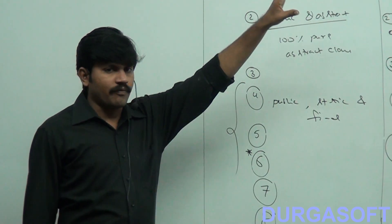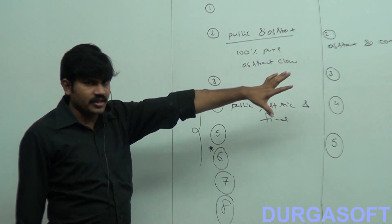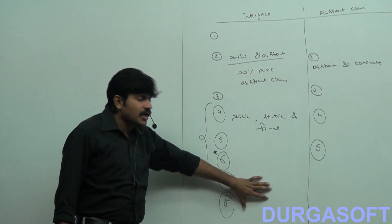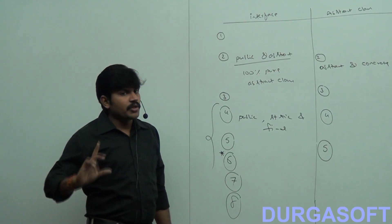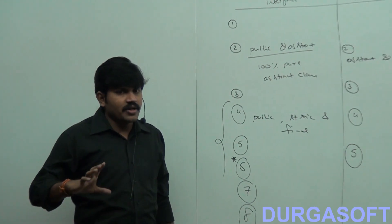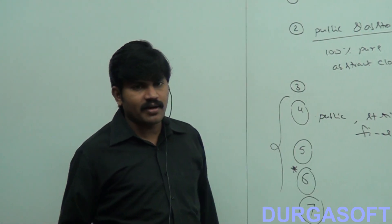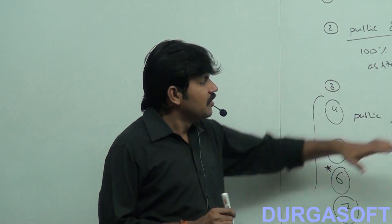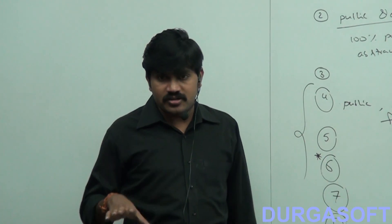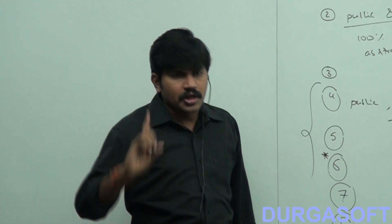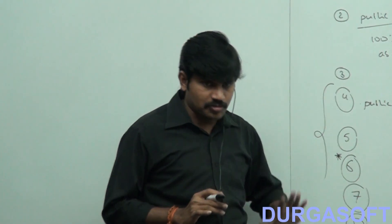So, when should we go for interface, when should we go for abstract class? We covered interface methods, abstract class methods, interface variables, static blocks, instance blocks, and constructor — 8 differences total. In the interview room, if the interviewer asks what is the difference between interface and abstract class, you should be in a position to give all these answers. These are the 8 differences between interface and abstract class — a most valuable and repeatedly asked question in the interview room.